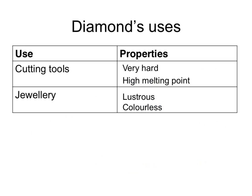Diamond is used in cutting tools because it's very hard, and also because it has a high melting point, which means that if the end of the cutting tool gets very hot through friction, it won't melt. Diamond is also used in jewellery because it's lustrous — meaning it catches the light — and because it's colourless.